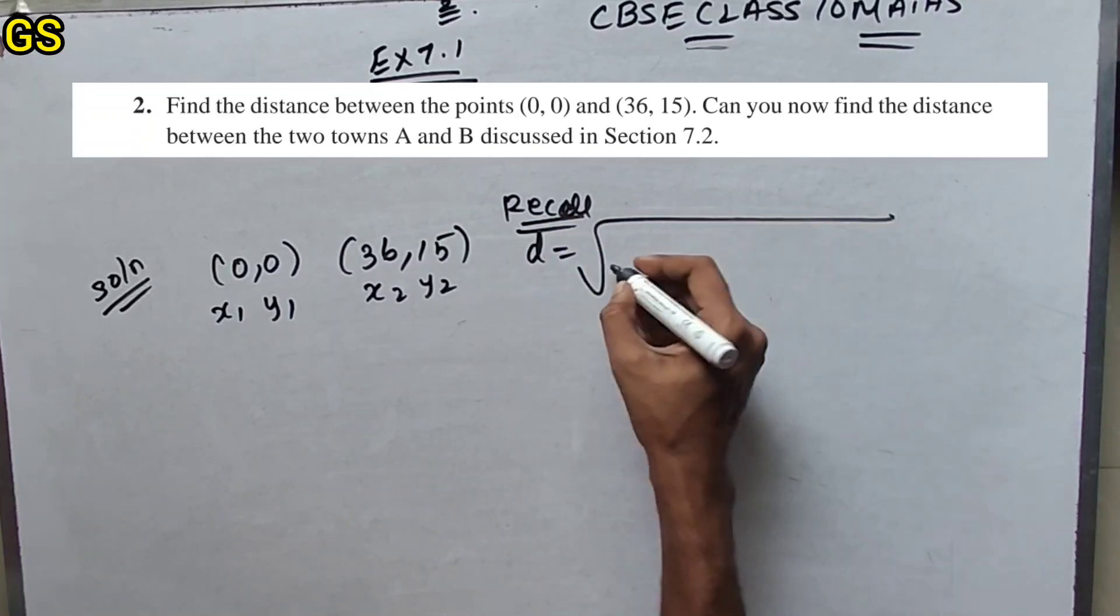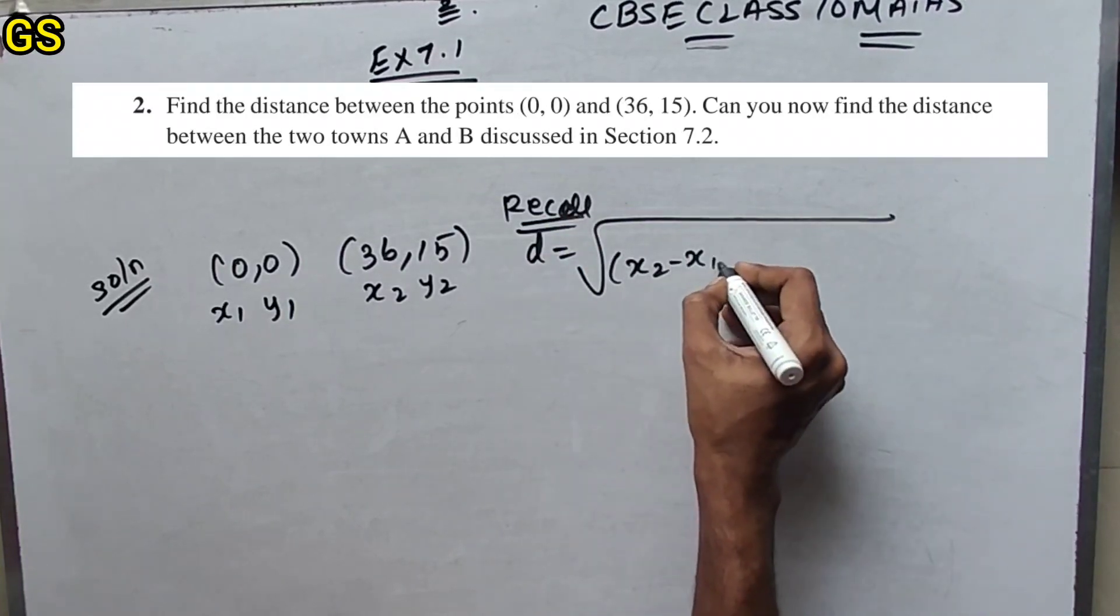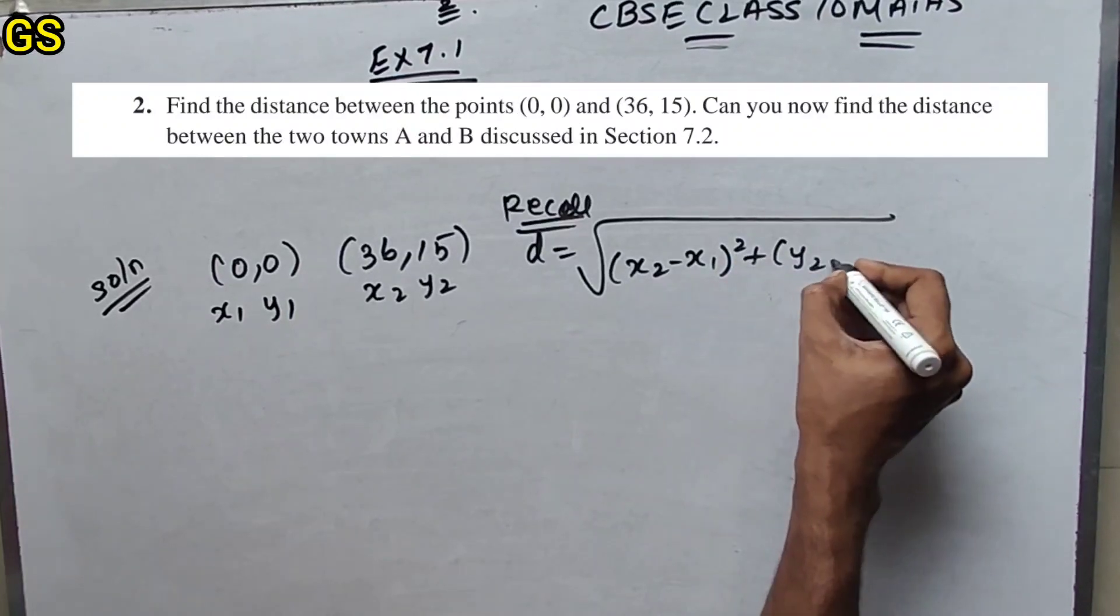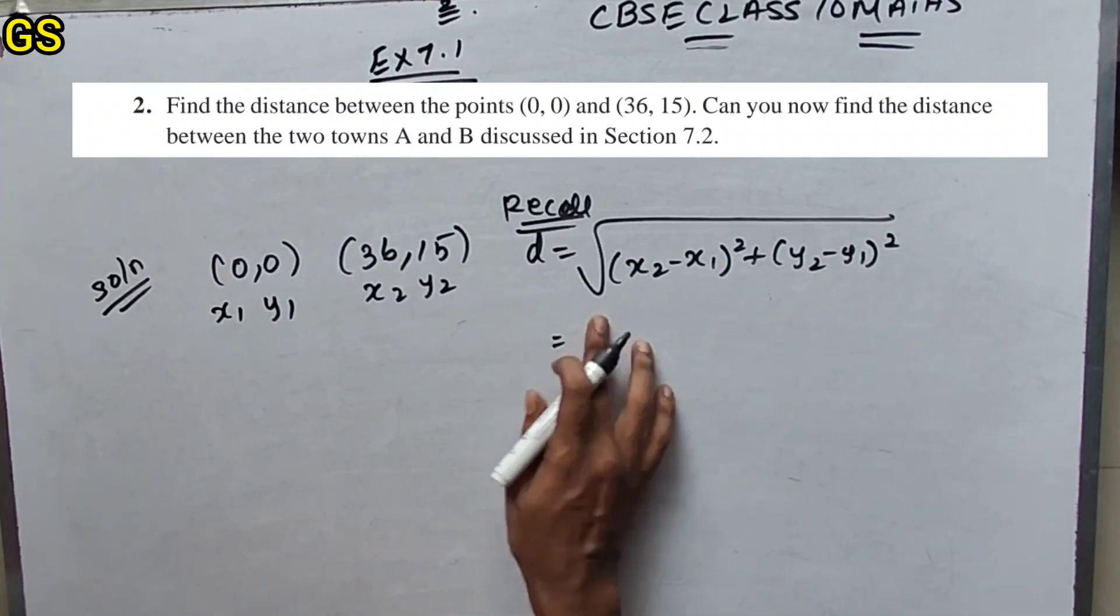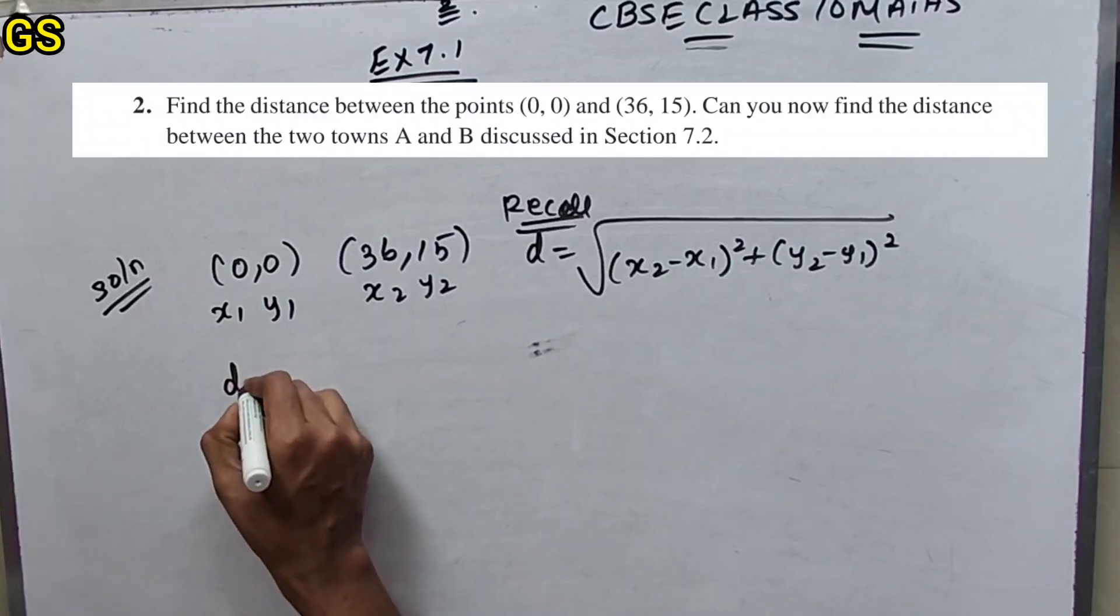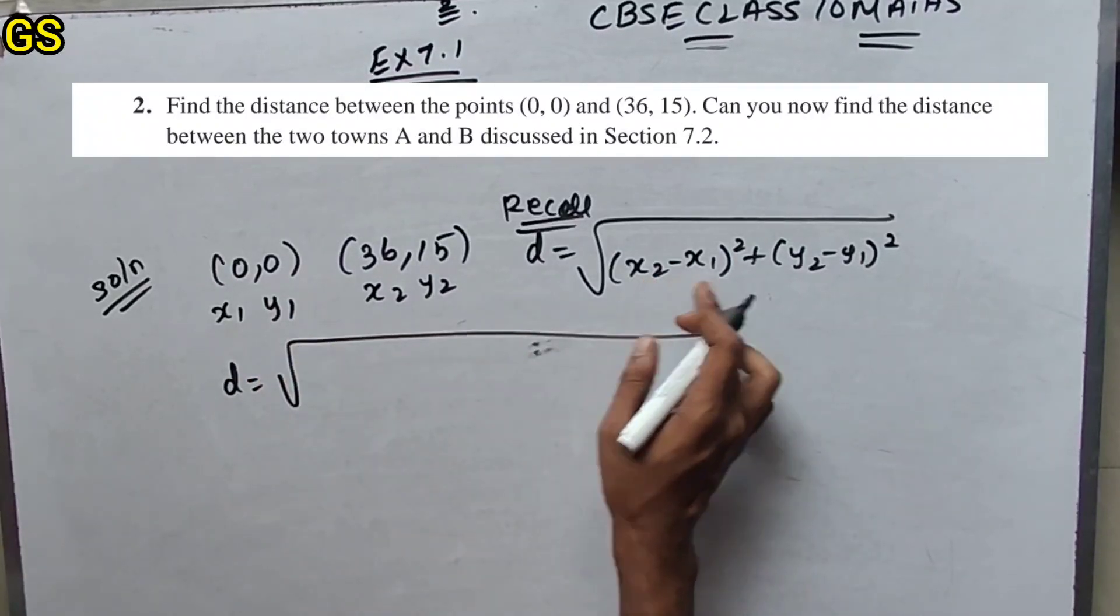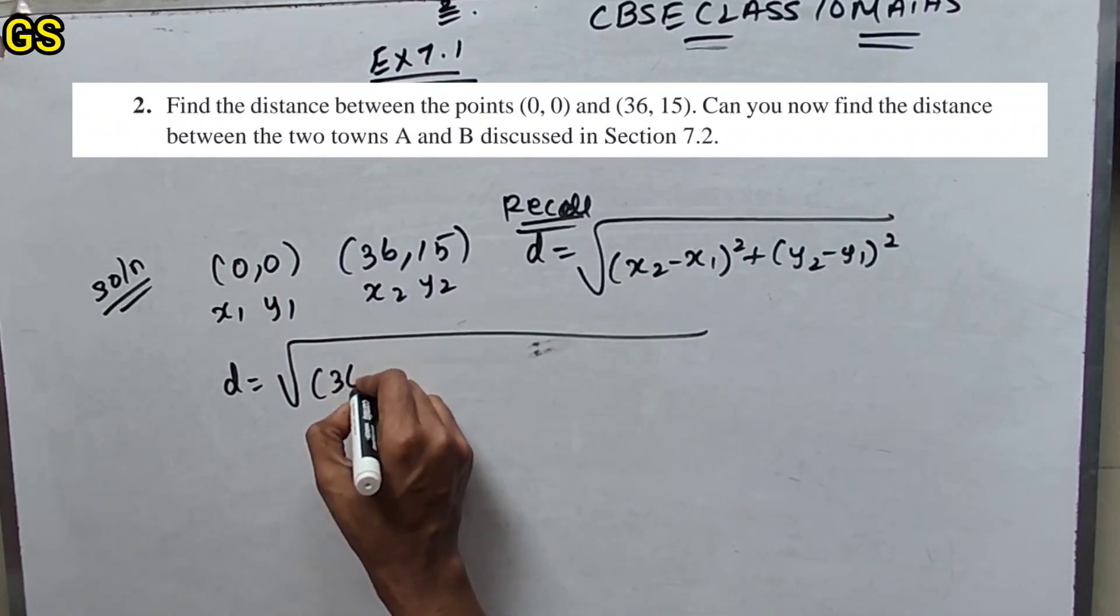Root of (x₂ minus x₁) whole square plus (y₂ minus y₁) whole square. So if you want to substitute the formula, d equals root of (x₂ minus x₁)...